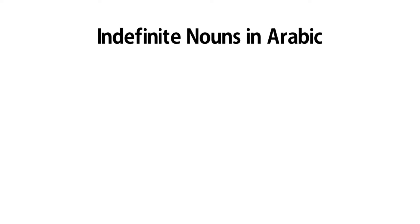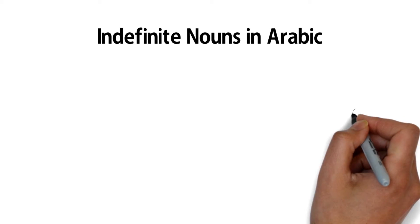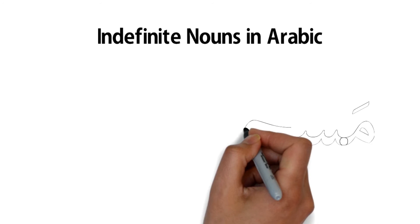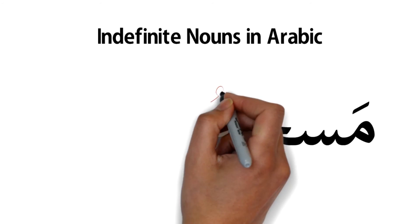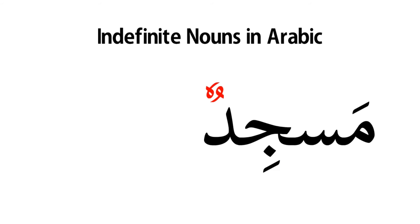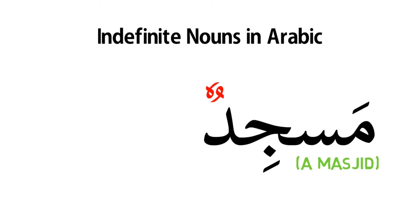The tanween at the end of the following nouns indicates that they are indefinite. Masjidun — this means a masjid, not a specific masjid, but a masjid. Look at the tanween at the end; you can hear the 'un' sound.